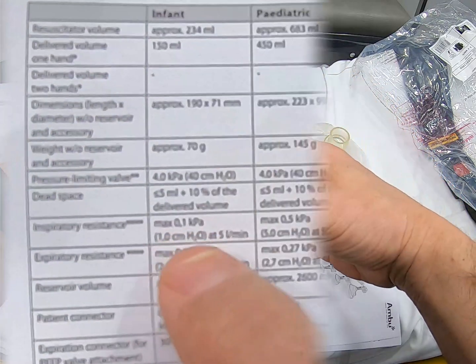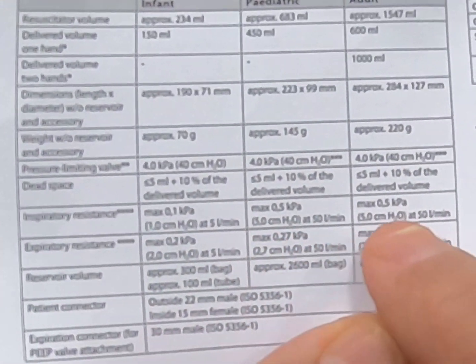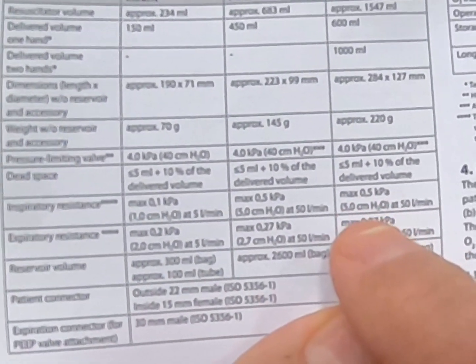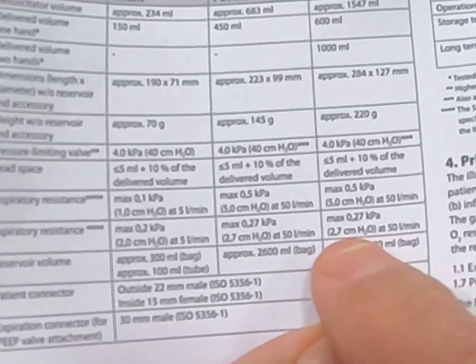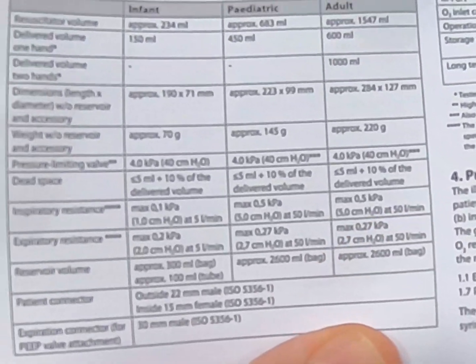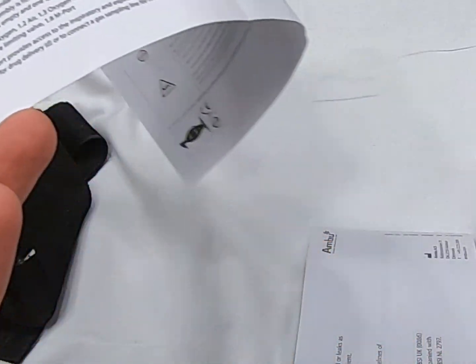Then we can set our PEEP and inspiratory pressures. For the adult, it's looking at about five centimeters of water pressure, and we can also have expiratory somewhere around seven.